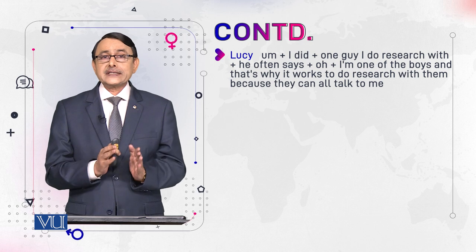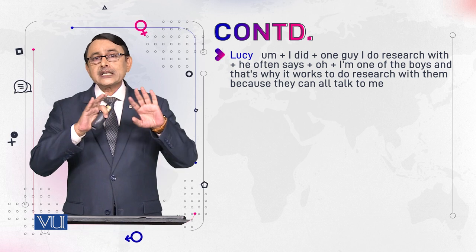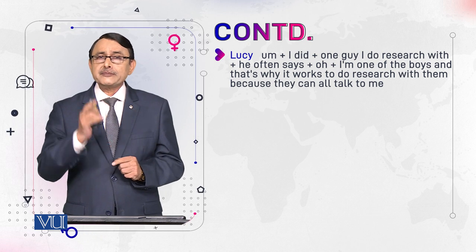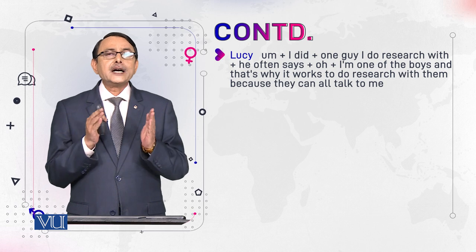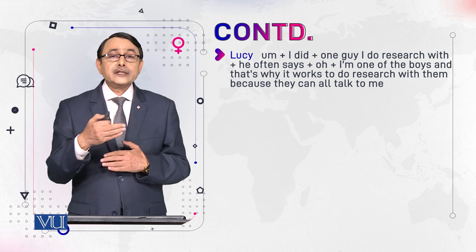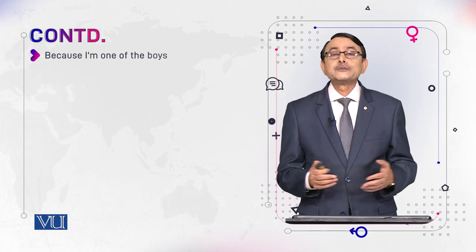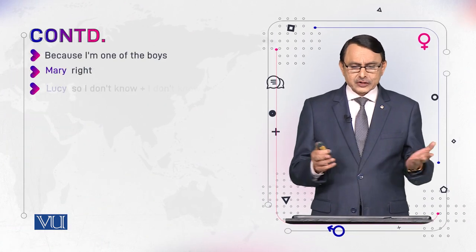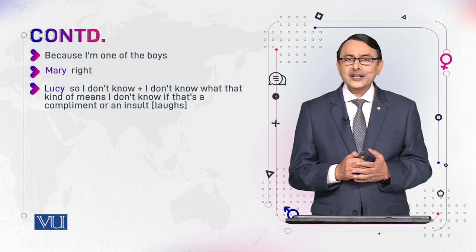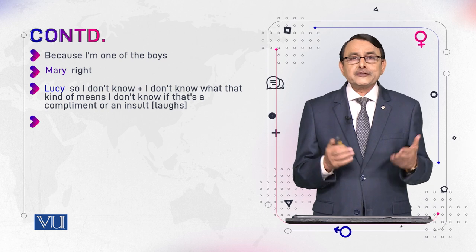All these things go against established norms of femininity. Being among men in this masculine university office environment, Lucy in fact suppresses and eliminates her femininity. This is the effect of gender inequality in a real sense, as shown by this dialogue. Mary responds: 'Right, so I don't know what that kind of means — I don't know if it's a compliment or an insult.'